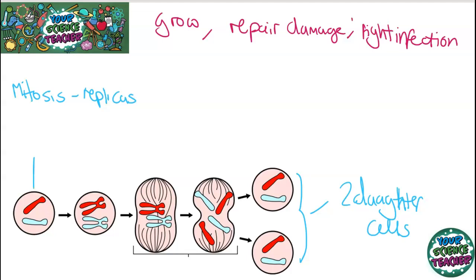Here's the normal amount of chromosomes in a cell. It makes an exact replica of itself and grows. The cell will grow and make more mitochondria and ribosomes, making copies of itself. This is the longest stage of mitosis.